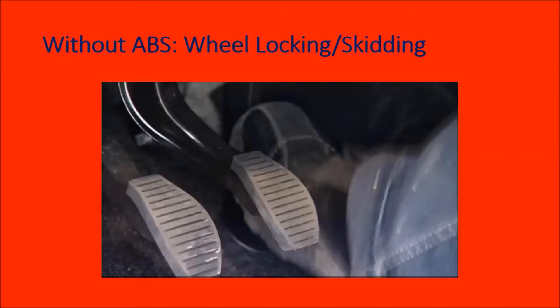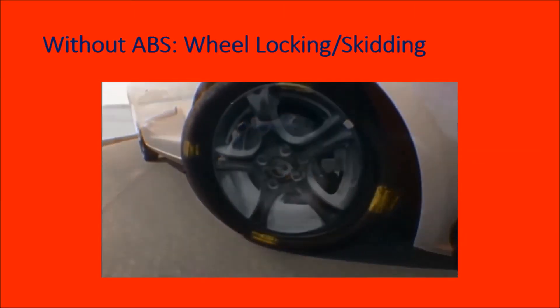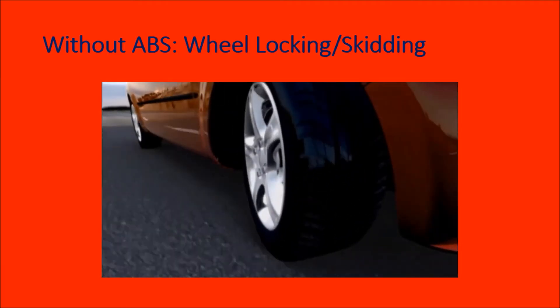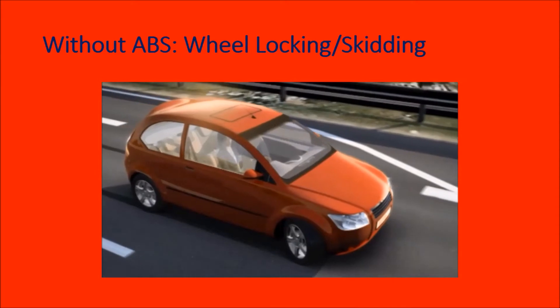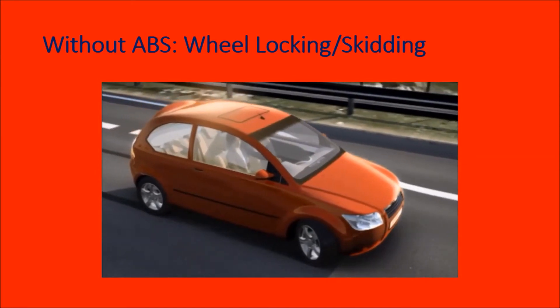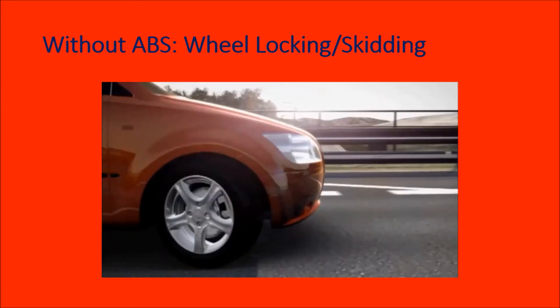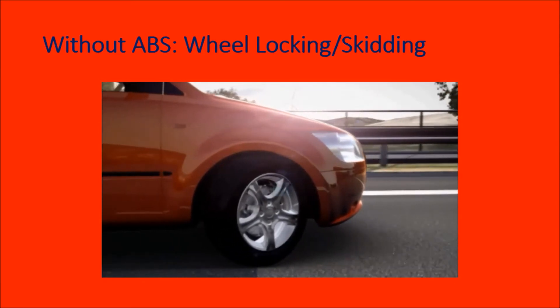In a vehicle without ABS, wheel locking and skidding takes place. As we could see in the video, when the emergency brakes are applied, the wheel gets locked due to brakes and the vehicle starts skidding. Thus, the vehicle is imbalanced and is not able to change direction while braking, leading to a collision with the obstacle.